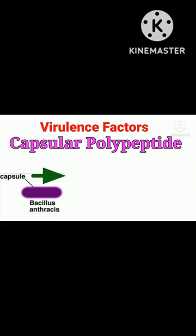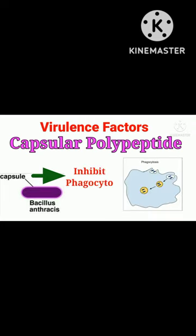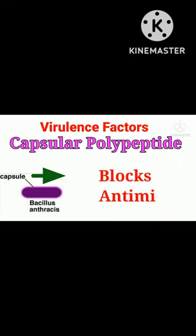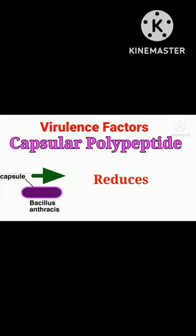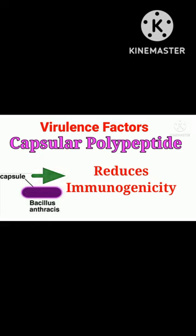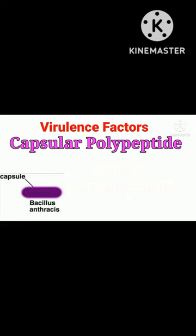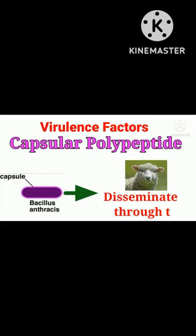As a result of these properties, the capsule inhibits phagocytosis, blocks antimicrobial peptides, and reduces immunogenicity. This allows capsulated Bacillus to disseminate through the host.